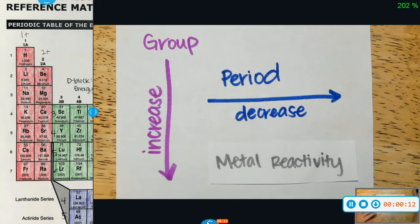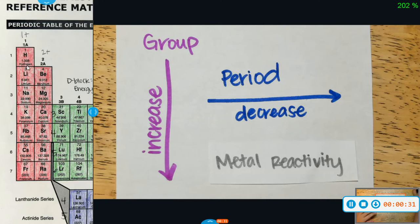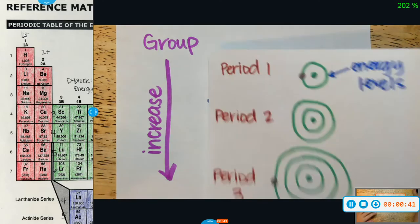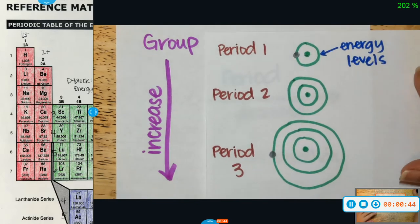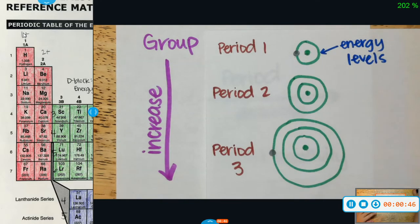For metal reactivity, for our group trend, as we go down our group, the reactivity is going to increase. Let's go ahead and take a look at our group one elements. The only difference in our group one elements is that they have different energy levels. All of these elements want to give up their one valence electron that they have in their outermost shell or outermost energy level.